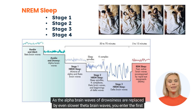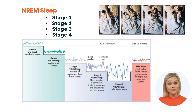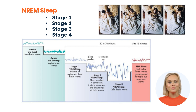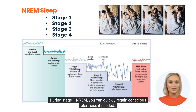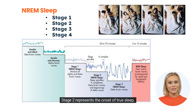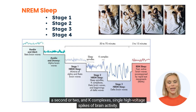NREM sleep: As the alpha brain waves of drowsiness are replaced by even slower theta brain waves, you enter the first stage of sleep. Lasting only a few minutes, stage one is a transitional stage during which you gradually disengage from the sensations of the surrounding world. During stage one NREM, you can quickly regain conscious alertness if needed. Stage two represents the onset of true sleep, defined by the appearance of sleep spindles — brief bursts of brain activity that last a second or two — and K-complexes, single high-voltage spikes of brain activity.